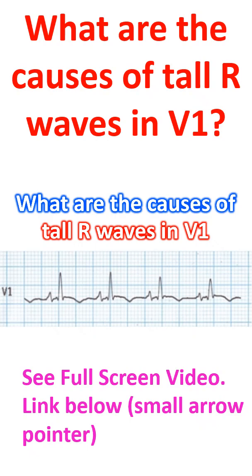In normal individuals, there is only a small r wave in V1 which is followed by a deep S wave, indicating left ventricular dominance.